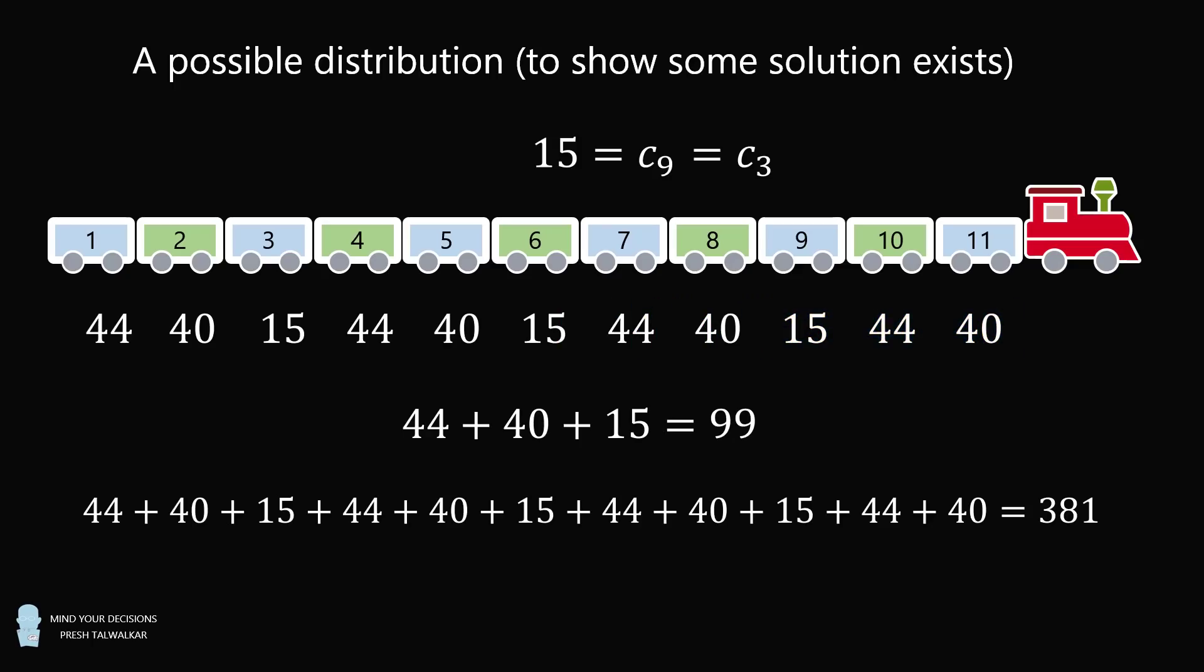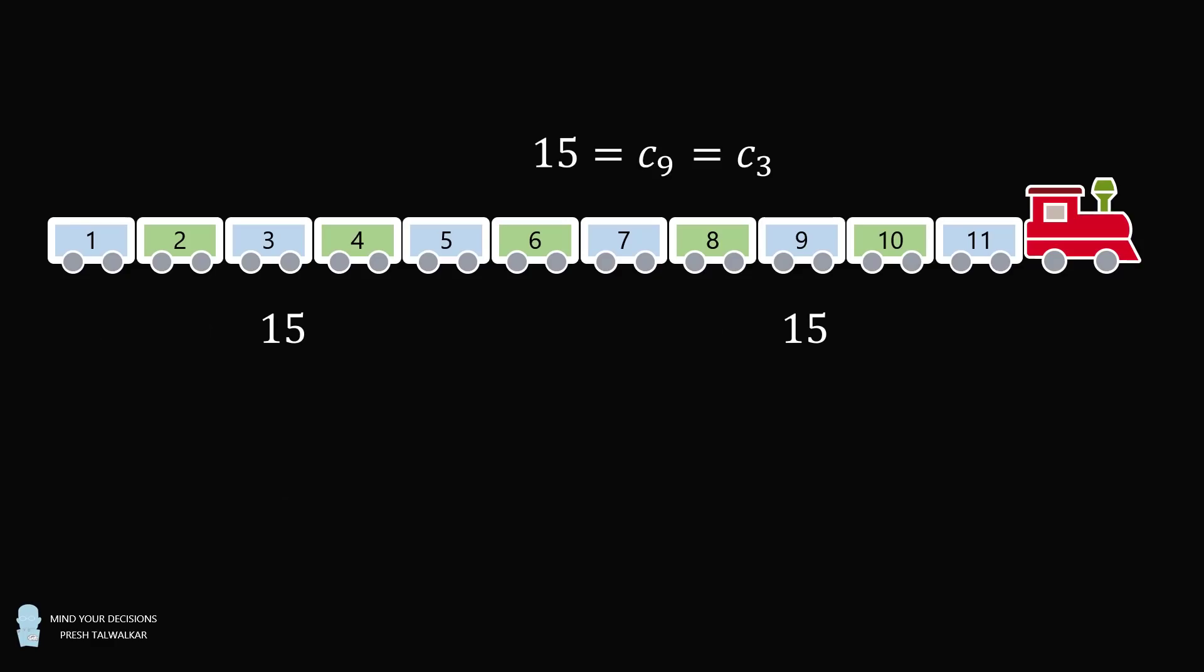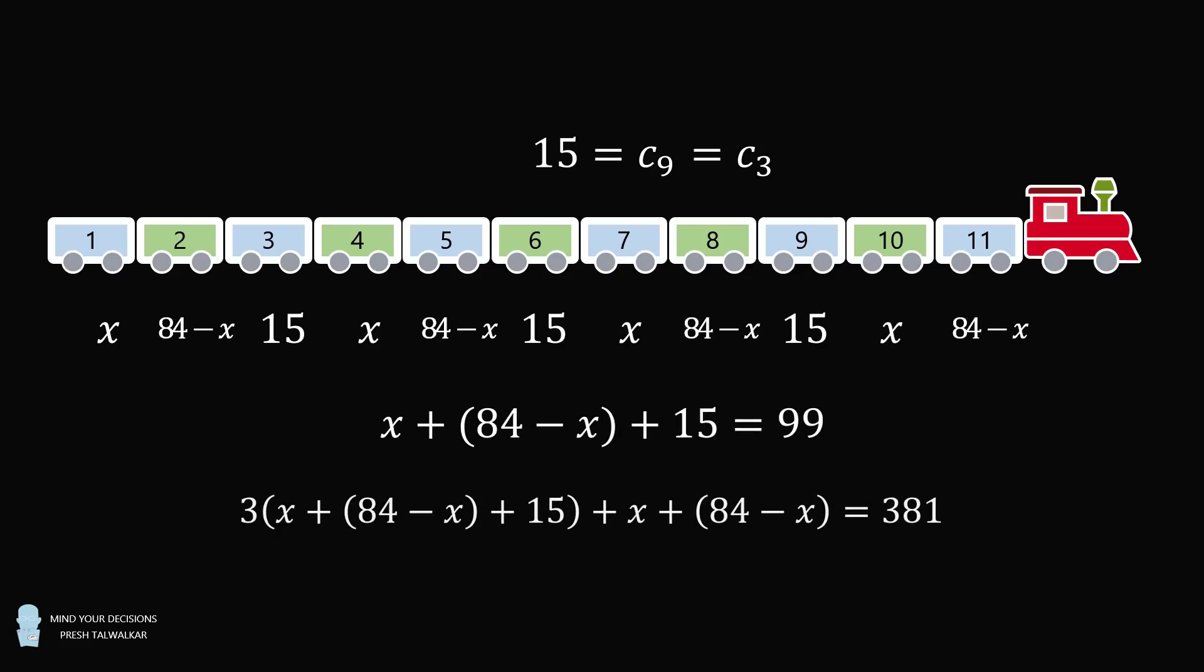Just to show a little more general solution: Let's suppose that C1 = x. Then C2 would be equal to 84 - x. And we can just repeat this pattern. So we'll be able to demonstrate that all of these are solutions for any values of x.